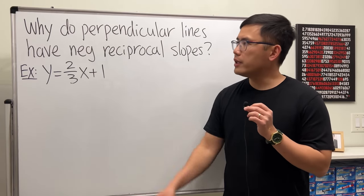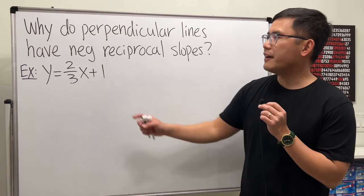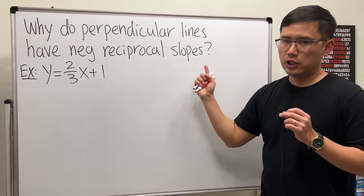In this video, let's answer the question: why do perpendicular lines have negative reciprocal slopes?